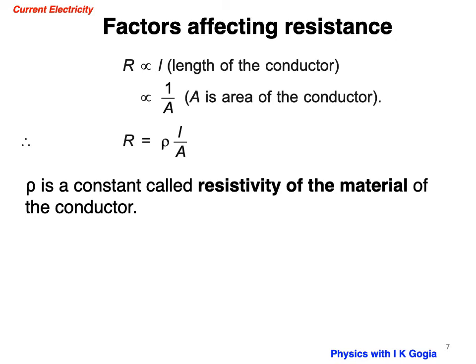Remember, resistance R is resistance of a conductor, means it depends on shape and size and the nature of the material. Whereas resistivity is that of the material of the conductor. That is, it depends only on the nature of the material and not on shape and size.